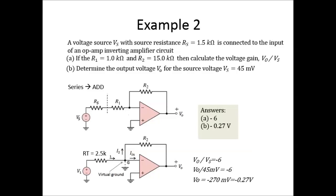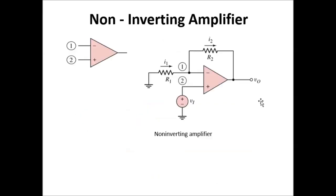The next configuration is the non-inverting amplifier. For the non-inverting configuration, the input is given to the non-inverting terminal. The inverting terminal is directly connected to ground, which means that node is zero volts because it is grounded.